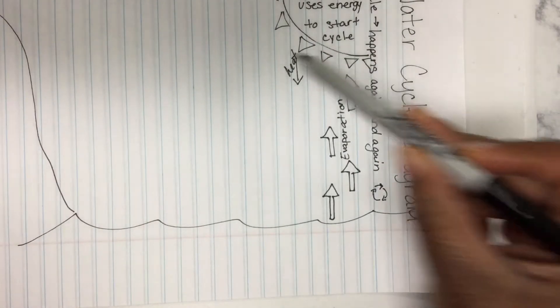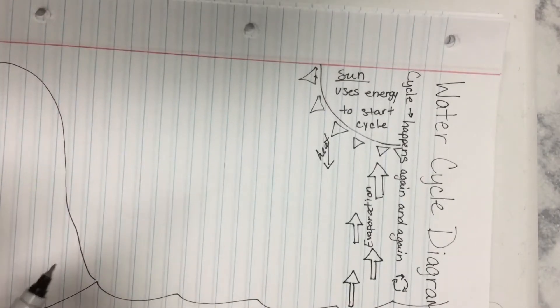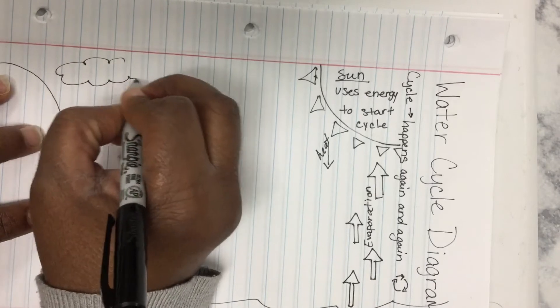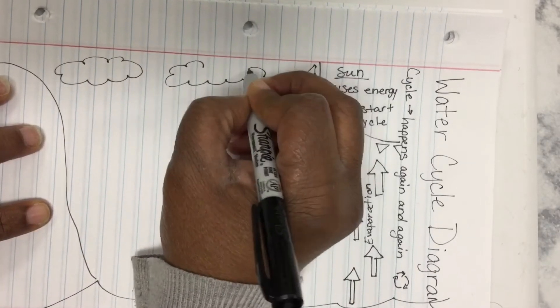Once that heat rises into the air, it starts to stick to dust and particles in the sky, and they start to form clouds. This is called condensation.